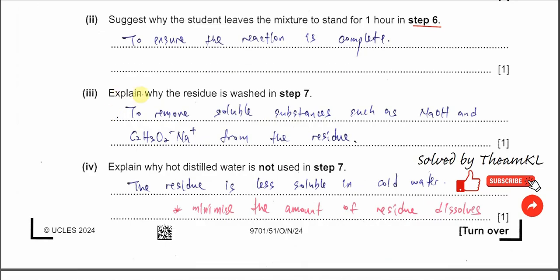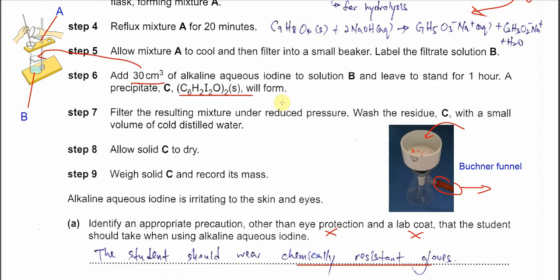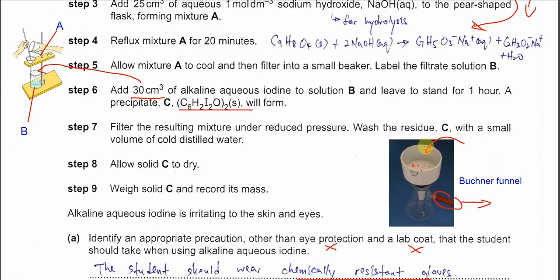Part 3, explain why the residue is washed by distilled water in step 7. Let's get back to step 7. Step 7 is using the Buchner filter. You don't need to know the name of Buchner filter. So why we need to wash the residue now? The solid on the filter paper, we need to wash with some distilled water because we want to wash out some impurities like sodium hydroxide and this salt, those compounds that can easily be soluble in water.